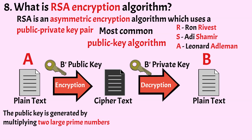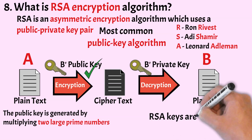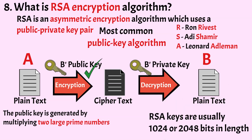The private key is generated through a different process involving the same two large prime numbers. A user can then distribute his public key, and anyone wishing to send the user a message would encrypt their message using that public key. RSA keys are usually 1024 or 2048 bits in length, making them extremely difficult to factorize. The technical detail of RSA relies on the fact that it is easy to generate a large number by multiplying two large prime numbers, but factorizing that large number back into the original prime numbers is very difficult.